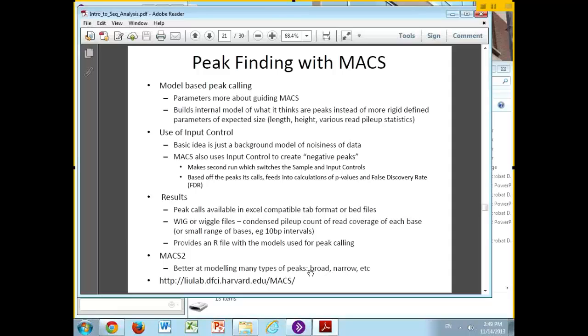This becomes more powerful if you use that input control, the mock IP. In the simplest case, you're thinking of it as the generally expected background level. What MACS does is it uses the input control to create something it calls negative peaks. It reverses the analysis: first it treats your sample as the actual chromatin immunoprecipitation and the noise as a control, then it flips it around where it treats the control like a sample and the sample like a control, and tries to figure out how many times it would have called a peak in this condition. Depending on the locations where those are compared to the peaks it called in the normal condition, it uses that to feed into its stats for p-values and false discovery rate.